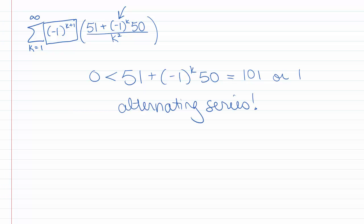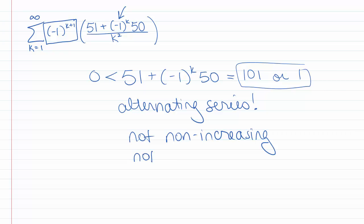But if you were thinking of using the alternating series test, that's not going to work. Because this top term is flipping back and forth between 1 and 101, it's not non-increasing — or maybe less confusingly, it's not decreasing. Since it's not non-increasing, we can't use the alternating series test. So again, we better hope that this is going to converge absolutely.